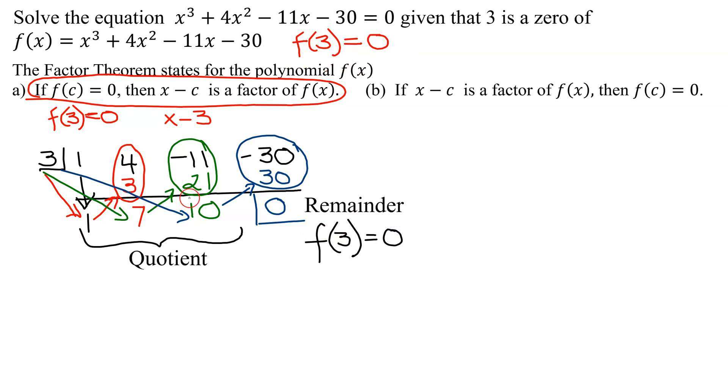So we know that this part is looking pretty good. Now we can take our original polynomial, x³ + 4x² - 11x - 30 = 0, and we can write it as the factor x - 3 times the quotient.